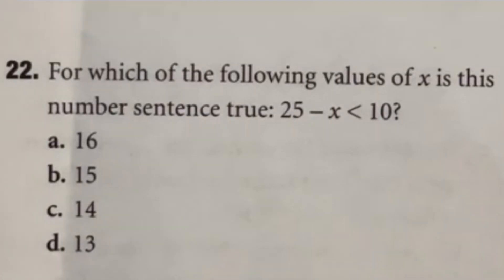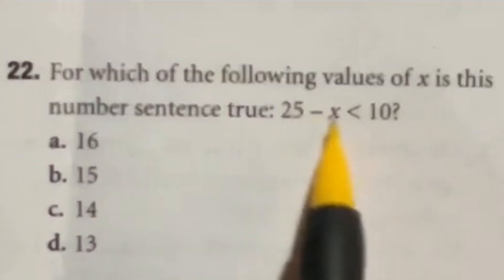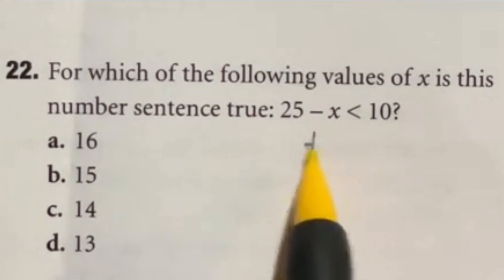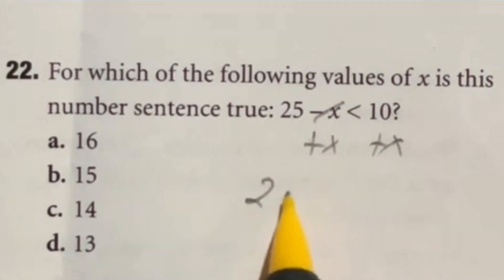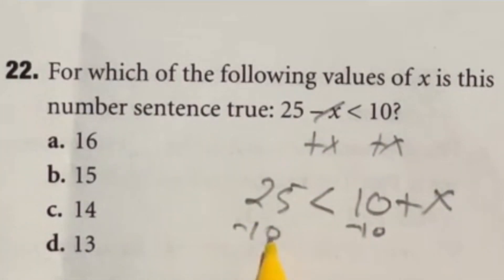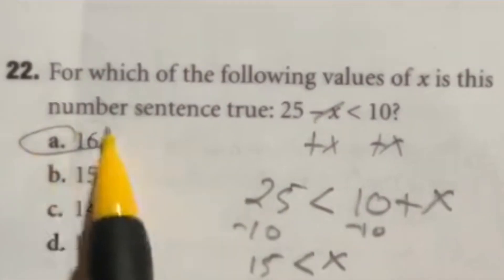All right, let's make some quick work of this guy. It says, for which of the following values of x is this number sentence true? Well, the first thing here is to get x by itself. So I'm going to go ahead and add x to both sides to get it to cancel out over here, giving me that 25 is less than 10 plus x. Now, because we have a plus here with this 10, we can subtract the 10 from both sides, giving us that 15 is less than x. So in which case is x larger than 15? Well, the only number in this list is A.